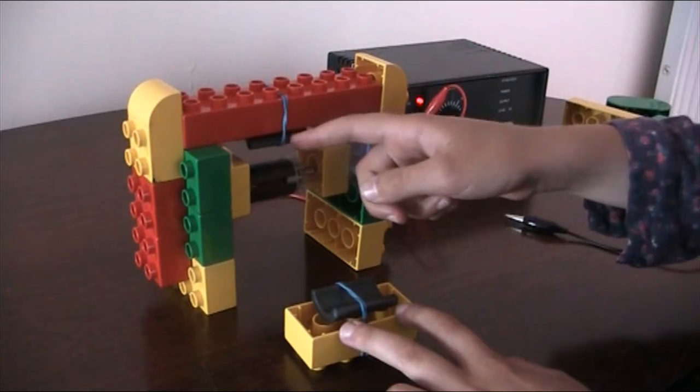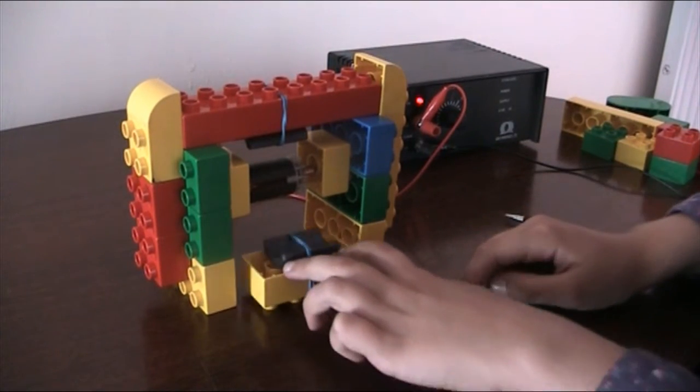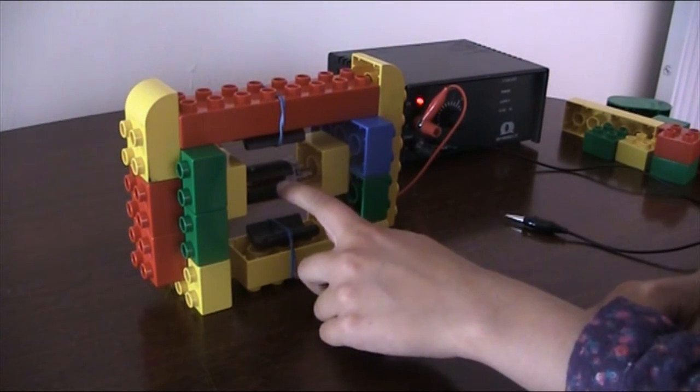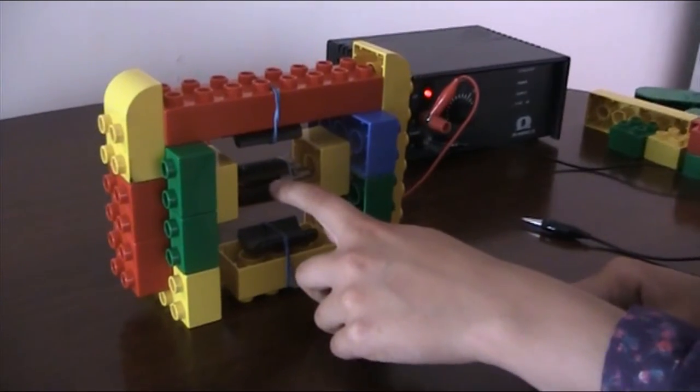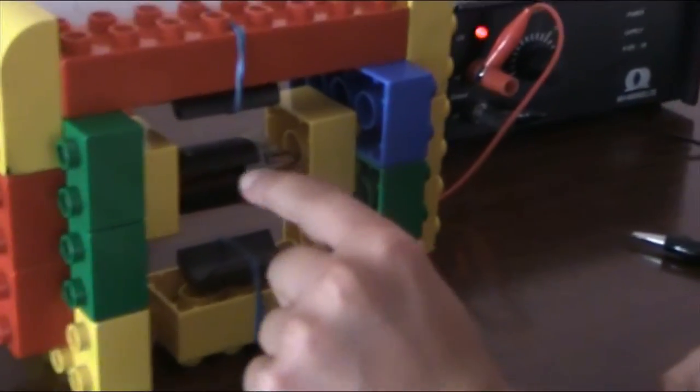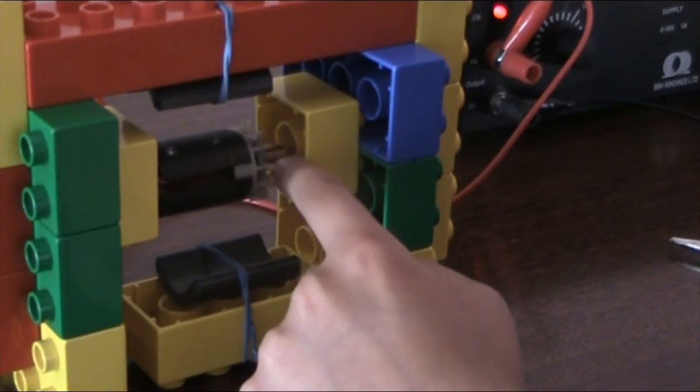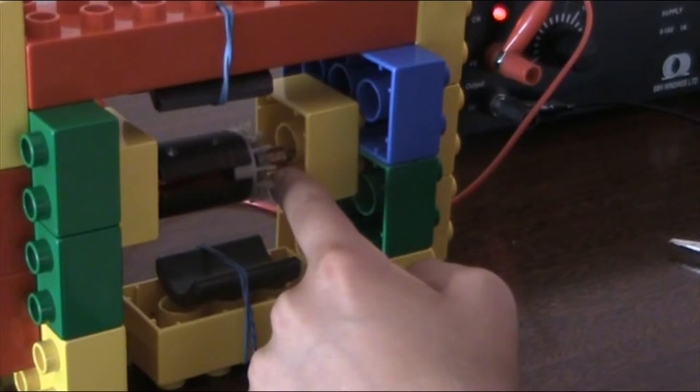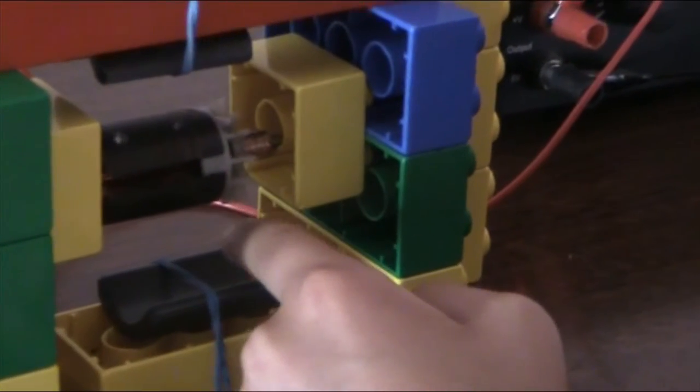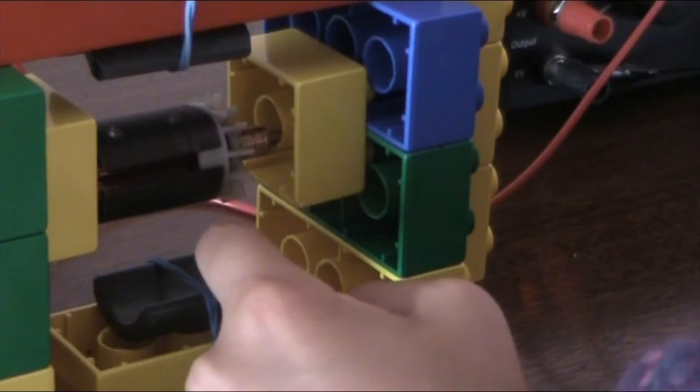These are two permanent magnets and in the middle there's a series of coils that connect to this cover plate called a commutator.